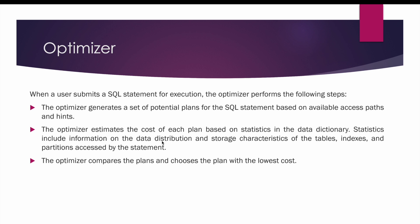Statistics include information on the data distribution and storage characteristics of the tables, indexes, and partitions accessed by the statement. When statistics are updated in the data dictionary, it means it should have information on tables and indexes — like how many rows the table has, how many distinct values it has, and how many null columns there are.